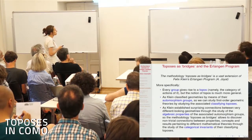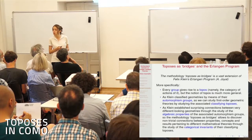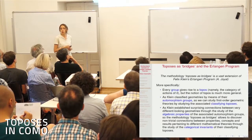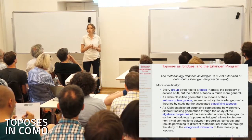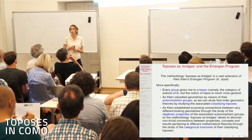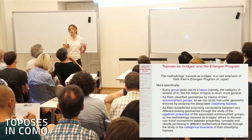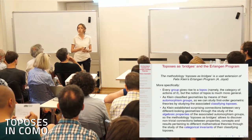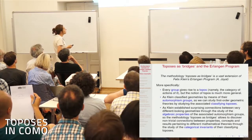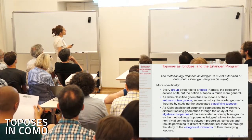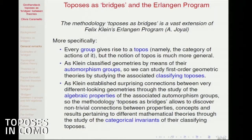There is a very natural relationship between groups and toposes. Given a discrete group, the category of actions of this group on sets is a topos. This can be generalized to any topological group or even a localic group. This way of assigning toposes to groups allows one to regard a topos as a generalization of a discrete group.